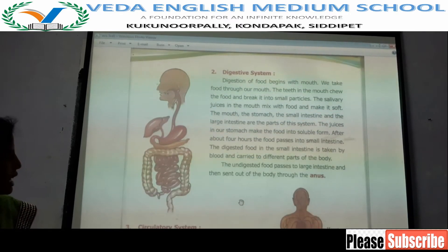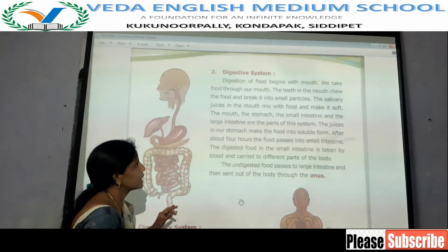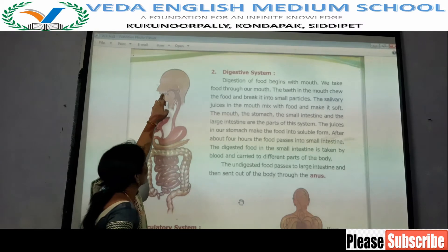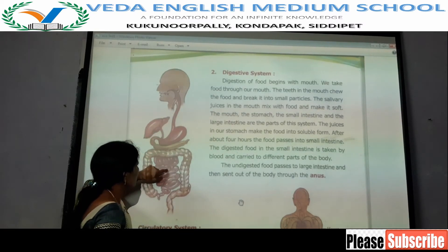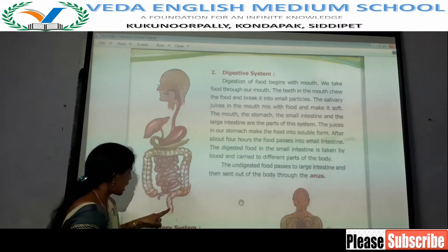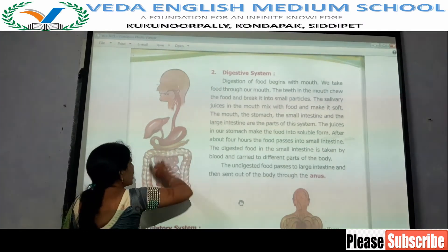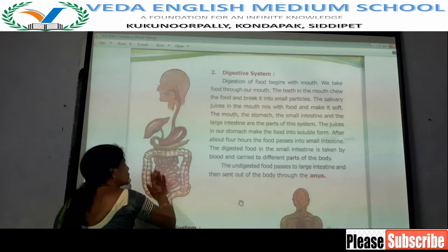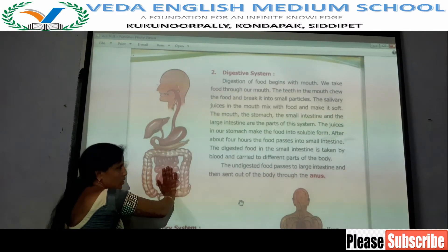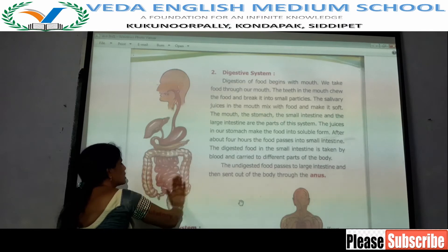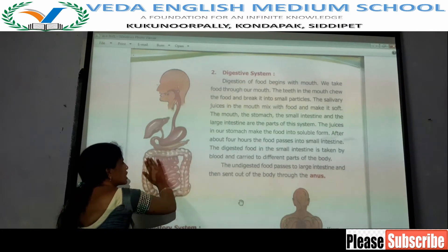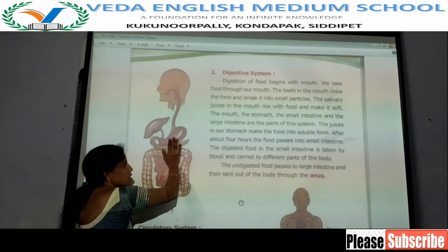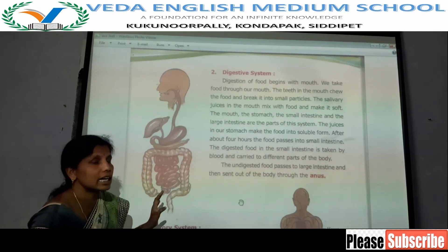The next system is the digestive system. The organs present in the digestive system are: mouth, food pipe, stomach, small intestine, large intestine, and anus. These organs connect together to form the digestive system. Digestion of food begins with the mouth.